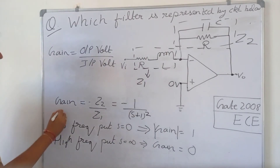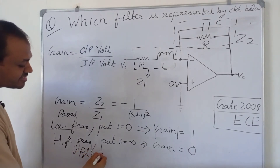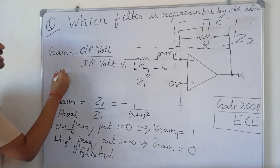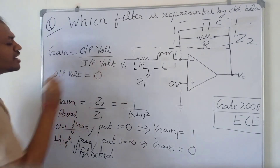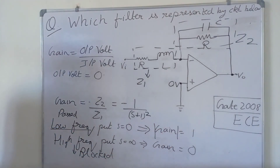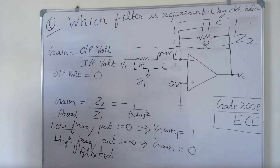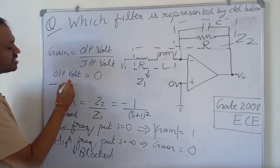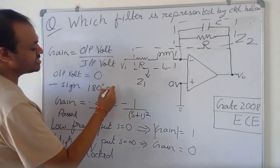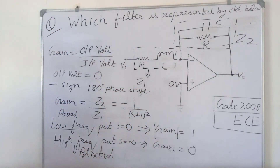Low frequency is passed but high frequency is blocked because at high frequency gain is equal to 0 — you get no output. High frequency is blocked and low frequency is passed where the magnitude of gain is equal to 1. Don't worry about gain equal to minus 1, because minus 1 only indicates a 180 degree phase shift — the signal is still passed.